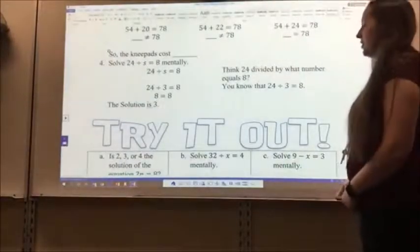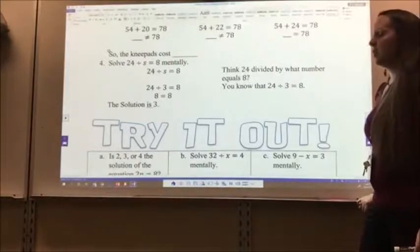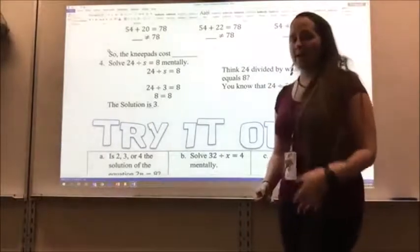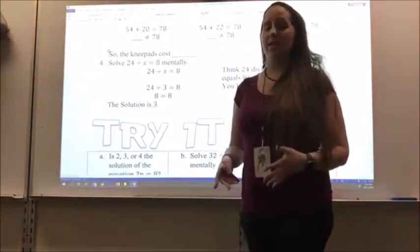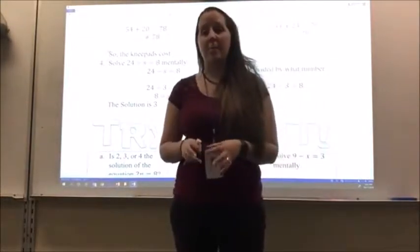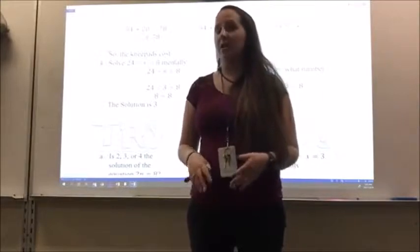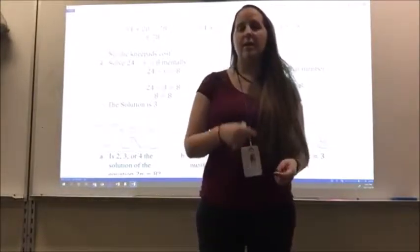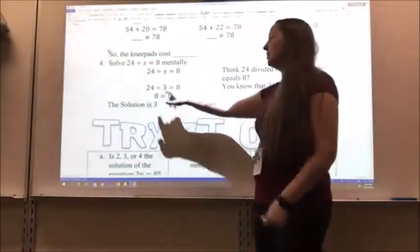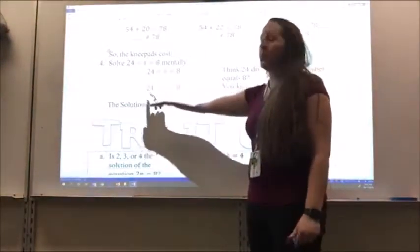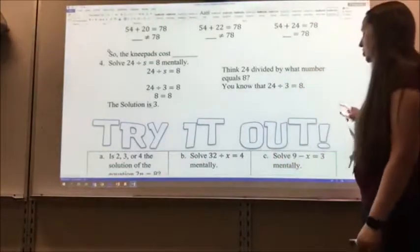All right, so next I want to solve 24 divided by S equals 8 mentally. So I'm going to think about what 24 divided by what will get me 8. So division, I can think about inverse operations, too. The opposite of division is multiplication. So I can think 8 times what gives me 24? Well, 8 times 3 gives me 24, so 24 divided by 3 equals 8. So the solution is 3.